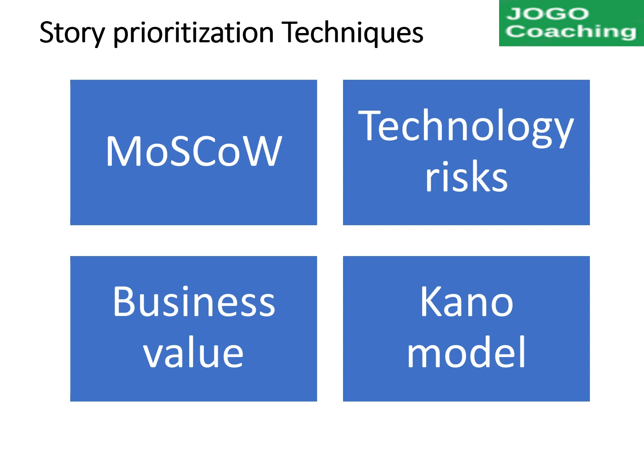We will discuss four user story prioritization techniques in this video. The techniques are MoSCoW, technology risks, business value, and Kano model.